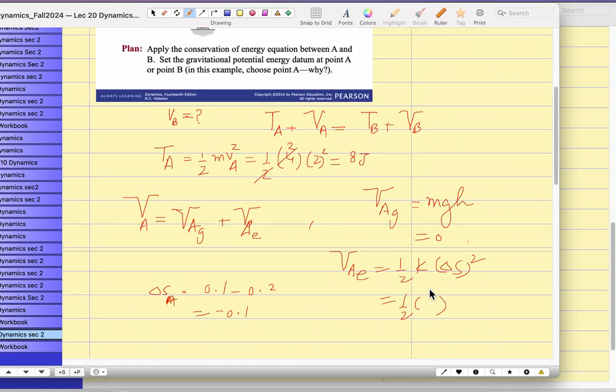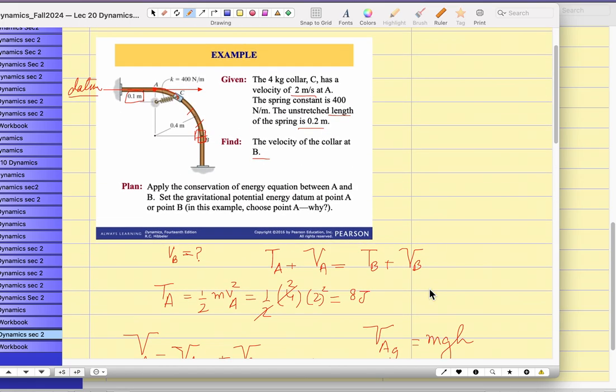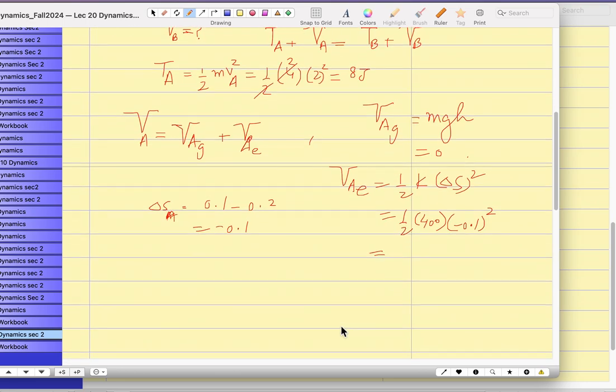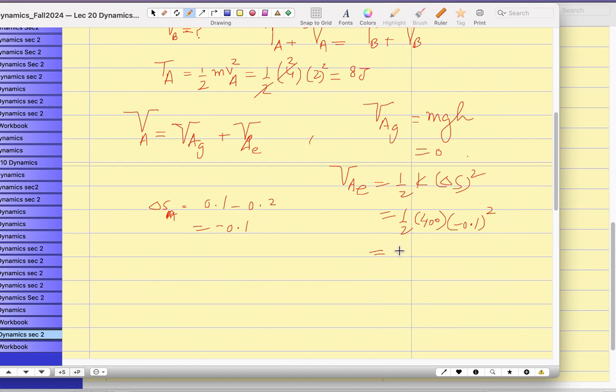Half times K. What is K? 400. Good. 400 times minus 0.1. And this energy is always positive. Even if it is contracted or compressed spring or stretched spring, energy is always positive. So what is that value? If you solve for this, you get 2 joules of stored tension energy in the spring. So we are good now.